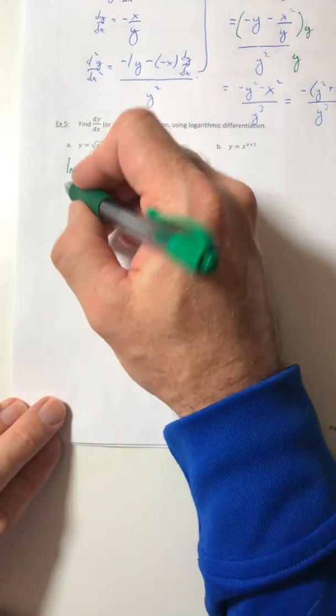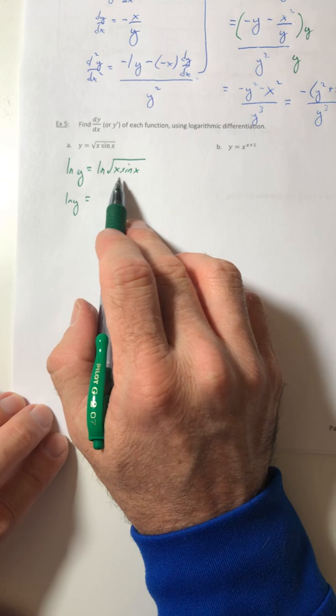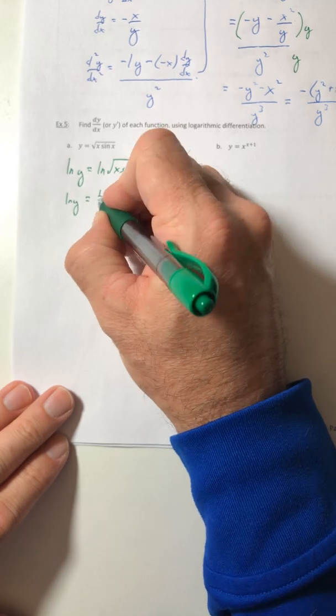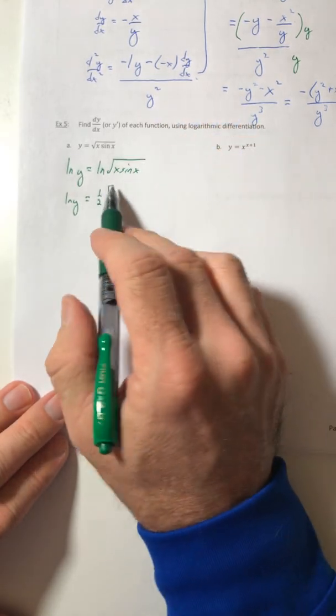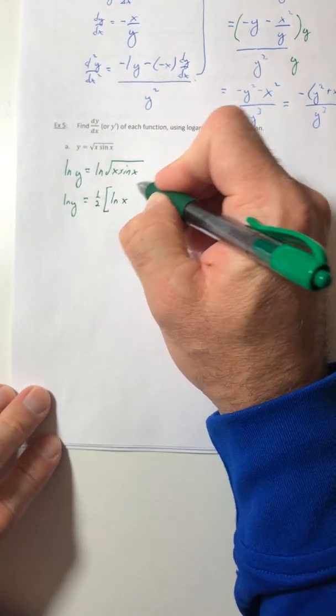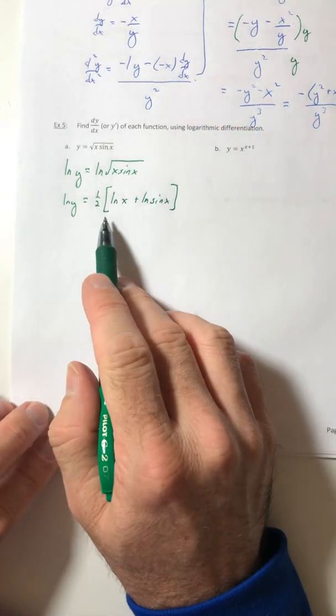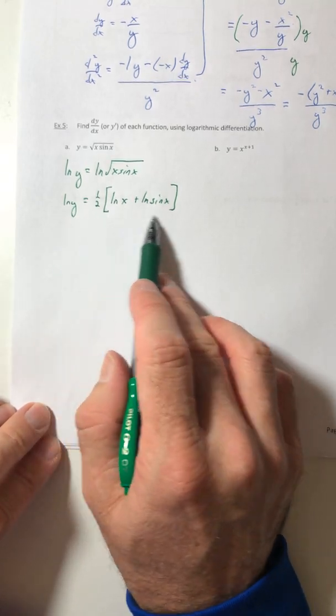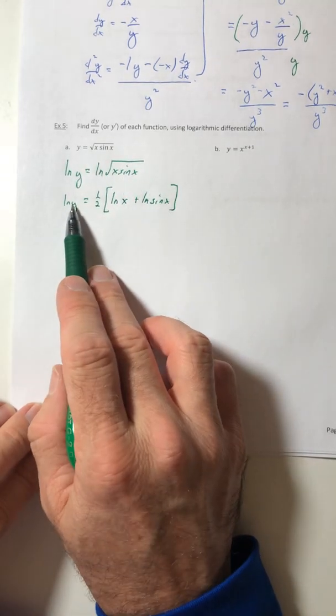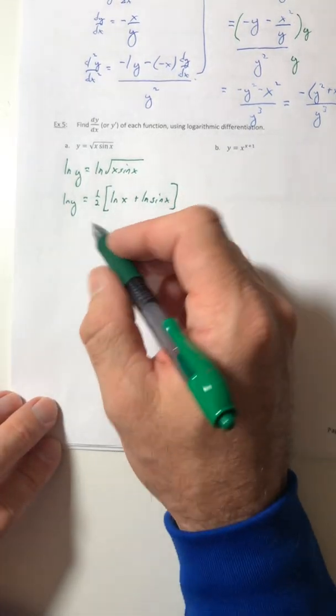So this ln of y, I can't really do anything with that. But over here, I can break this apart. So I can change the square root into a one half power, which then pulls down. And then the product will split into two different terms. So ln of x plus ln of sine of x. And so this is going to be a lot simpler to find a derivative as opposed to that. But now that it's ln of y, it's no longer y equals. So I have to use implicit differentiation to continue.